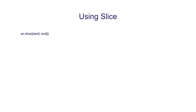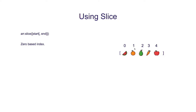Here you can see the syntax of slice. It takes two parameters: start and end. Both of these parameters are optional. Slice uses zero-based index, which means the element at position 1 is referred to with index 0, position 2 with index 1, position 3 with index 2, and so on. The slice function returns a new array with a shallow copy from start to end, and the important point is that the end index is not included.